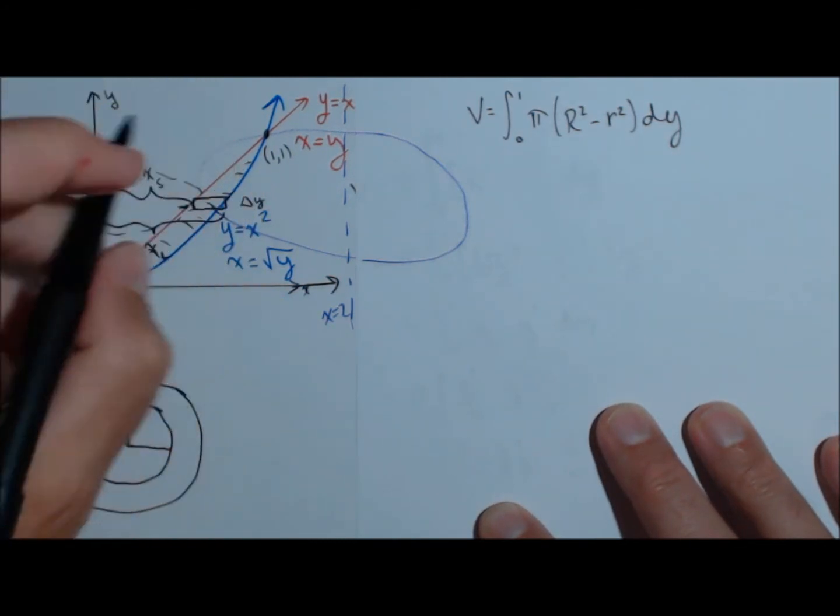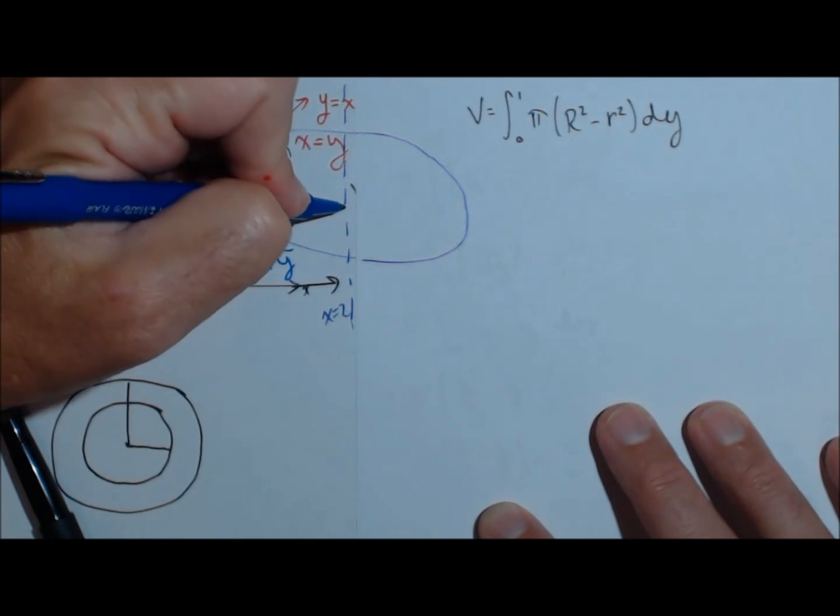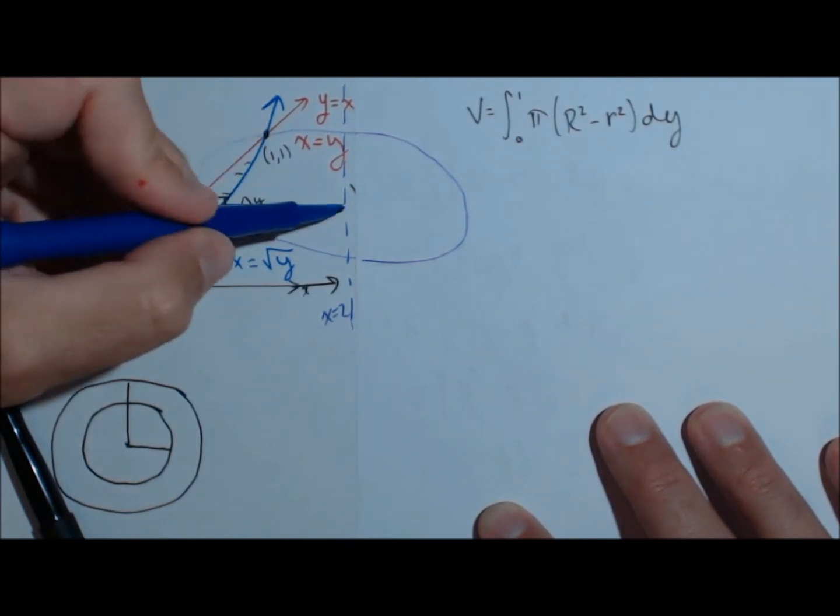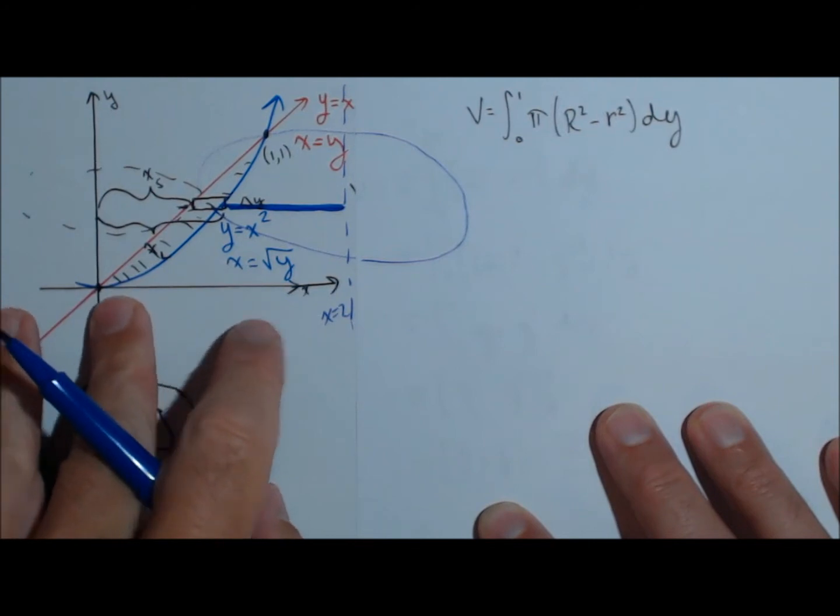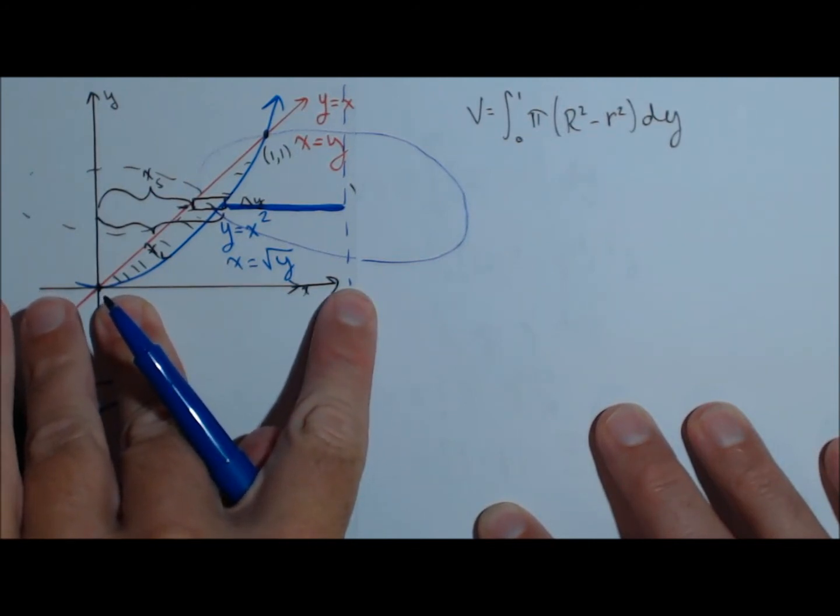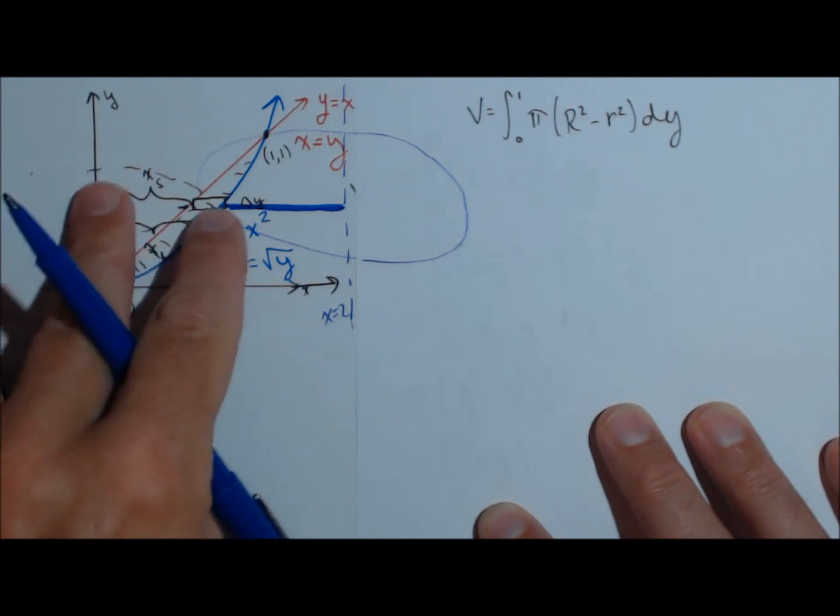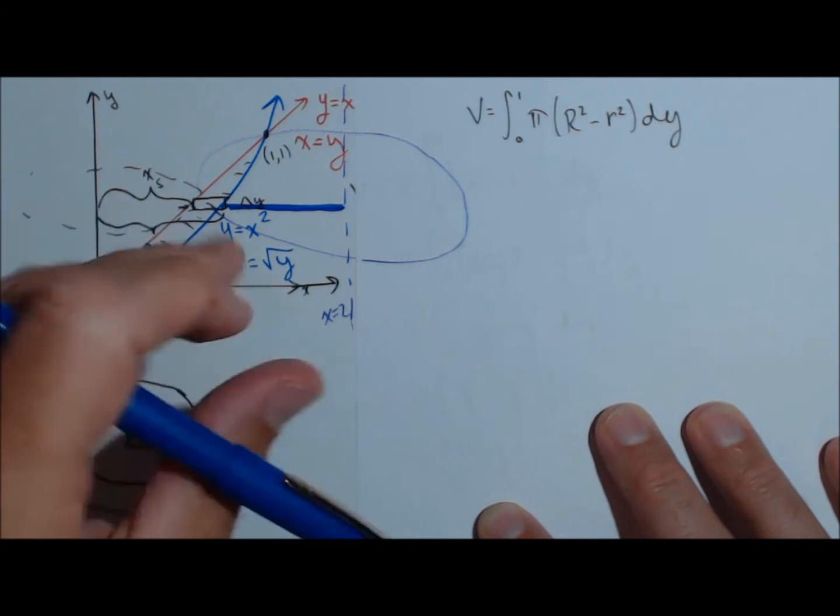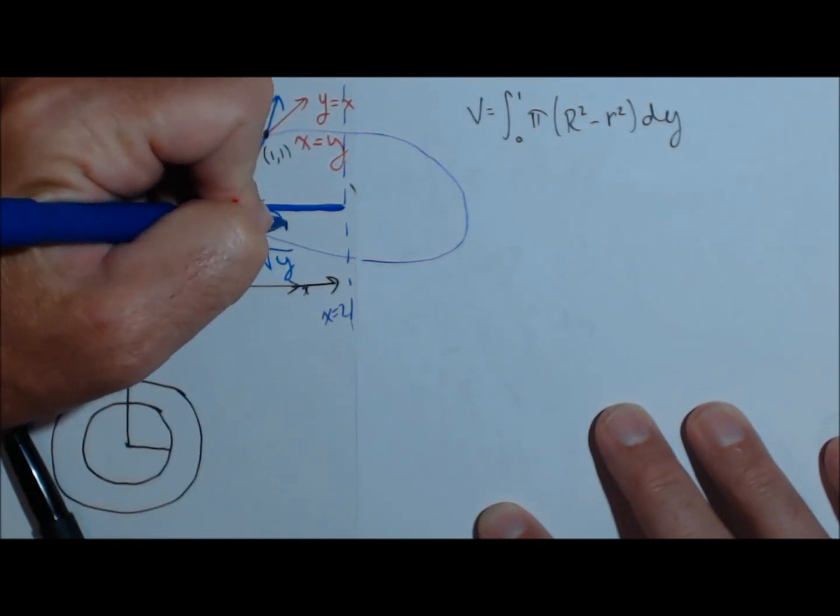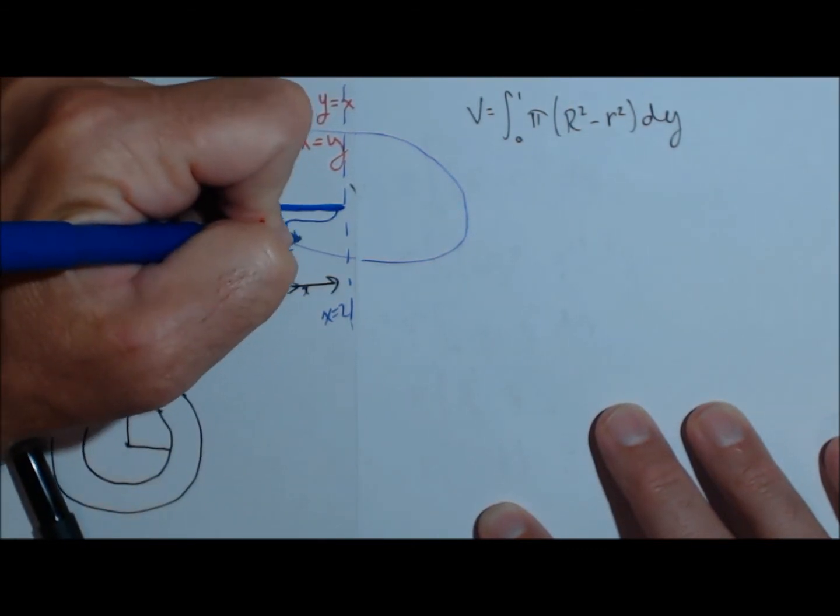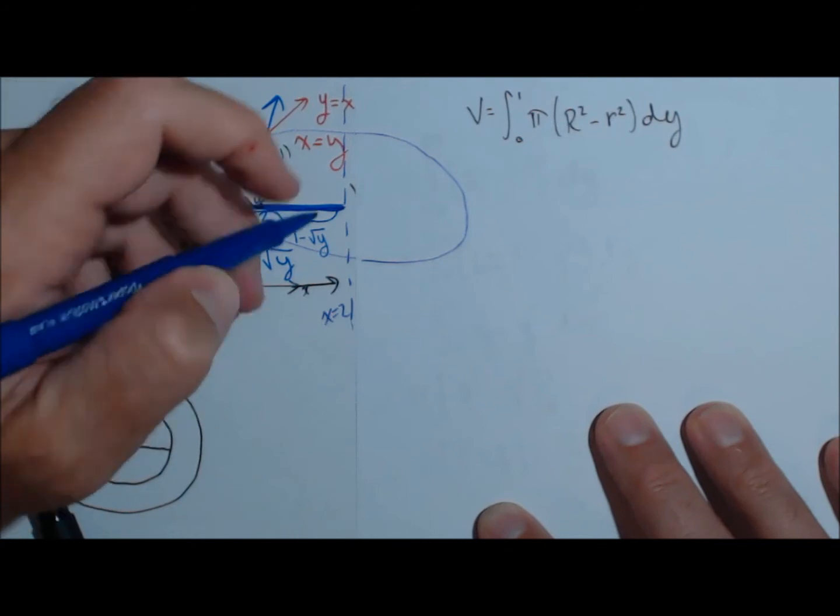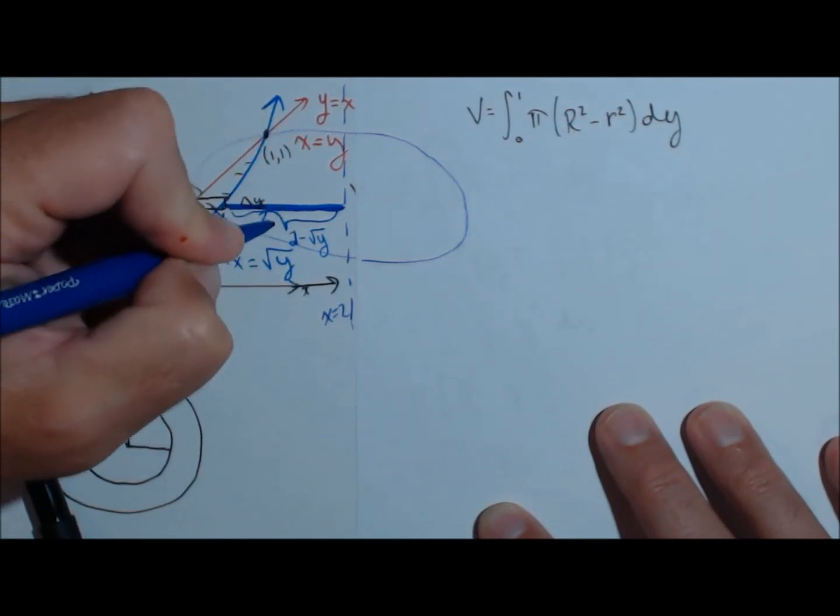So the little radius is going to be the distance from the line of revolution out to the first curve. So let's darken it a little bit. It's going to be that line right there. Now, in calculating this, we know from here to here is two. And notice from here to here is going to vary depending on where we make our slice. It's going to vary based on this curve, which is square root of y. So the length of this line is two minus square root of y.